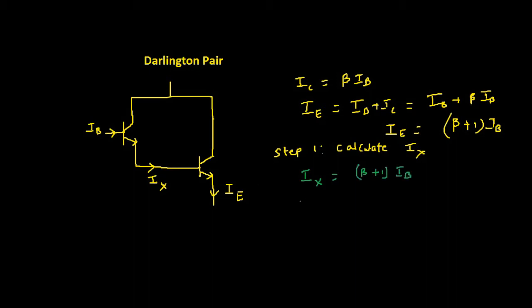IX is nothing but beta plus 1 times IB. So this IX is nothing but IB2, that is base current of the second transistor. Since the characteristics are similar,